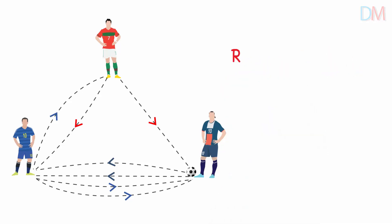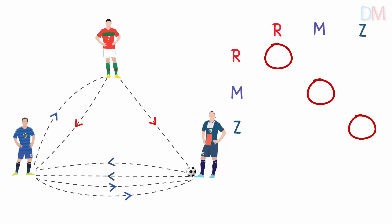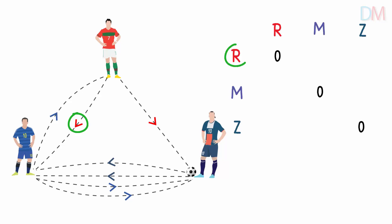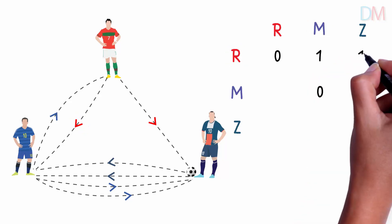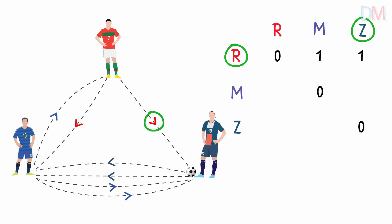We can have Ronaldo, Messi and Zlatan as rows. And to know who the ball was passed to, we have Ronaldo, Messi and Zlatan as columns. We all know what Zlatan is capable of, but let's assume the players can't pass the ball to themselves, so these three diagonal elements will be 0. There is one arrow going from Ronaldo towards Messi, so we write a 1 there, and there is just one pass from Ronaldo to Zlatan. Similarly, we fill the rest of the slots.